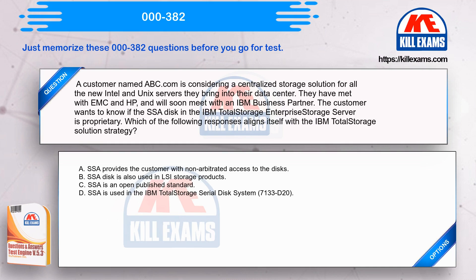A customer named ABC.com is considering a centralized storage solution for all new Intel and Unix servers in their data center. They have met with EMC and HP and will soon meet with an IBM business partner. The customer wants to know if the SSA disk in the IBM Total Storage Enterprise Storage Server is proprietary. Which of the following responses aligns with the IBM Total Storage solution strategy? Option A - SSA provides non-arbitrated access to the disks; Option B - SSA disk is also used in LSI storage products.